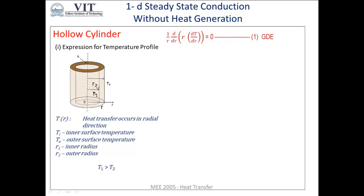Since R lies between R1 and R2, it is always a positive value, so 1/R will also be some positive value and cannot be zero. Therefore, the only possibility for the product to be zero is that the other term must equal zero. So we set d/dR (R · dT/dR) = 0.